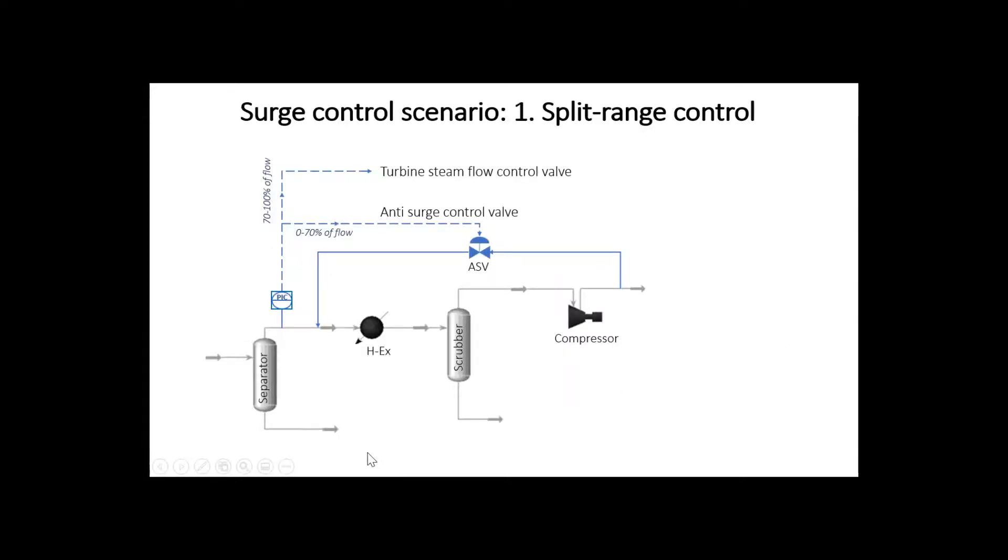Let's now look at one example where we use split range control system. In this example, the mixture is separated into gas and liquid fractions in the separator, then the separated gas goes through the cooler and the gas scrubber where the minor amount of condensed liquid is separated. Then the dry gas enters the compressor and the compressed gas flows downstream.